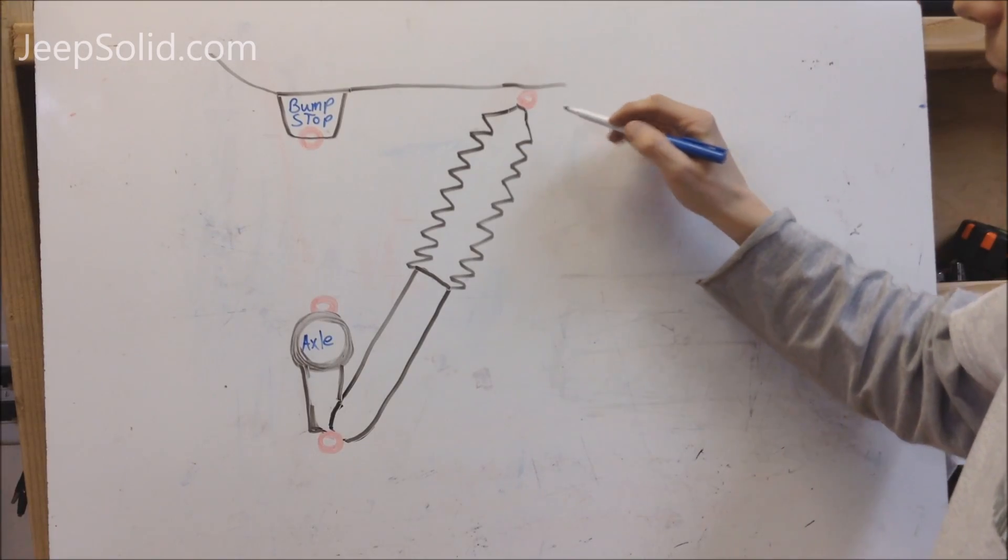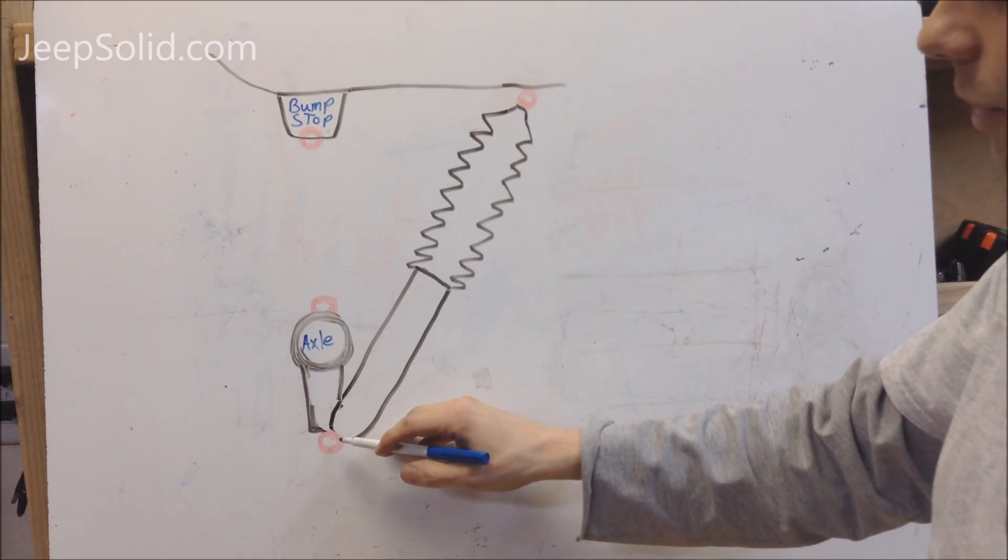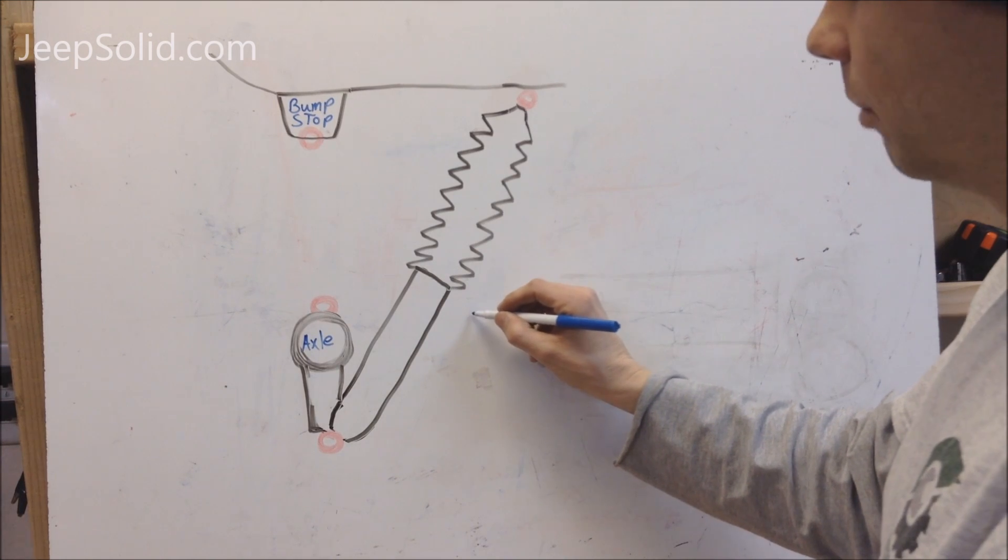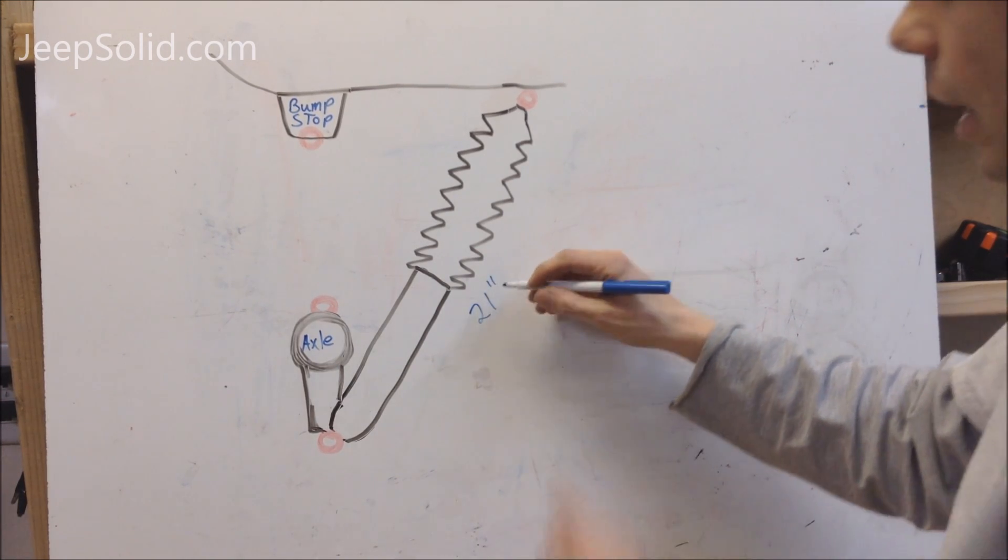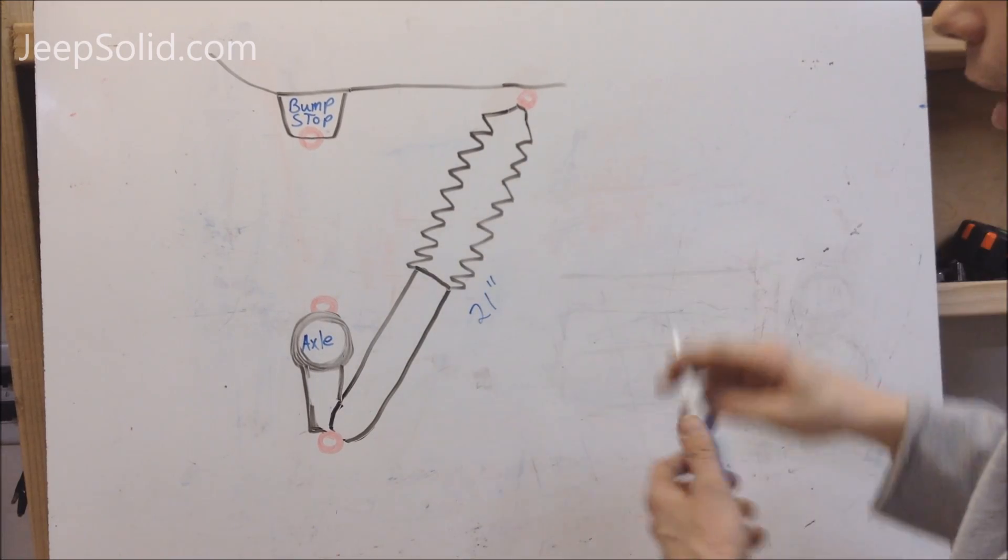So now that we have our measurements, we know that from the mounting point on the frame to the mounting point at the bottom of the axle, this shock has to be a minimum of 21 inches in length. We want to actually exceed that because we don't want to overextend our shock.